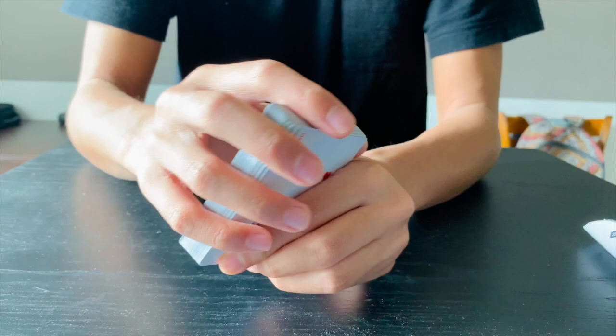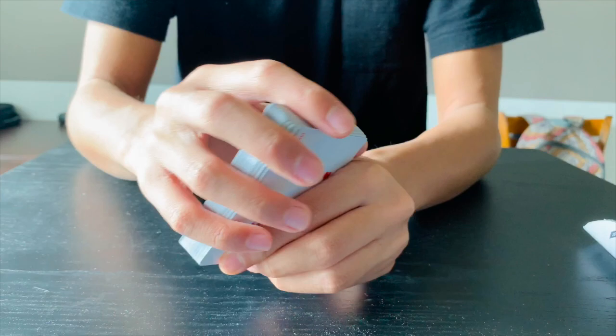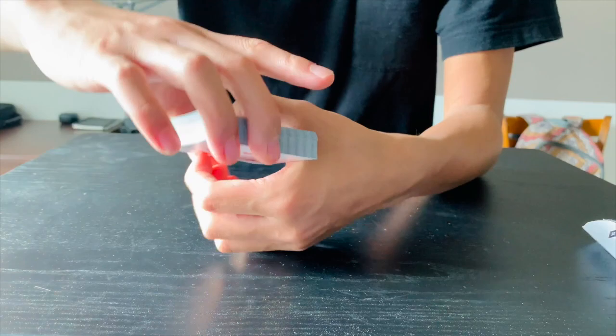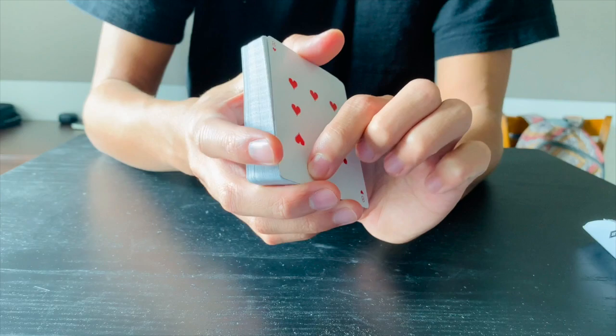So hold it like this and kind of line up your fingers like this against the edge. And just let the cards rest on your knuckle here. Let your cards rest on your knuckle here, but don't squeeze it. Just rest them on your knuckle. Then bend your thumb.